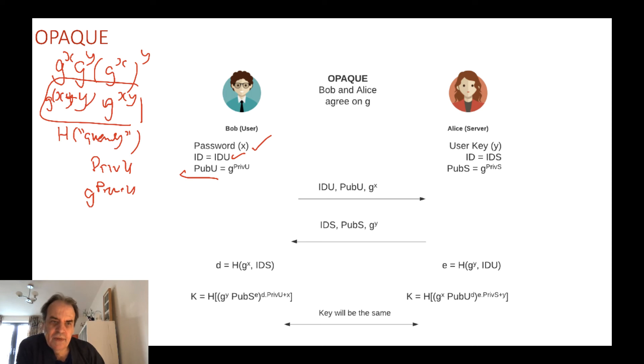We're using discrete logs. In an elliptic curve type method we would use the addition of these points, the generator point, but using the elliptic curve. We're using Diffie-Hellman here so we're using discrete logs.